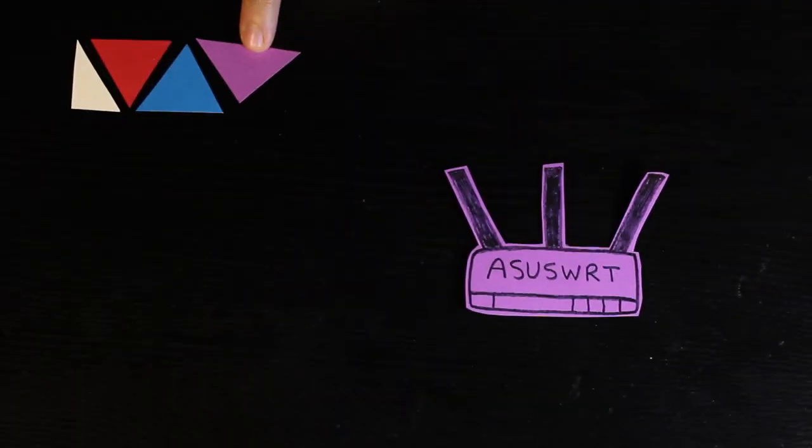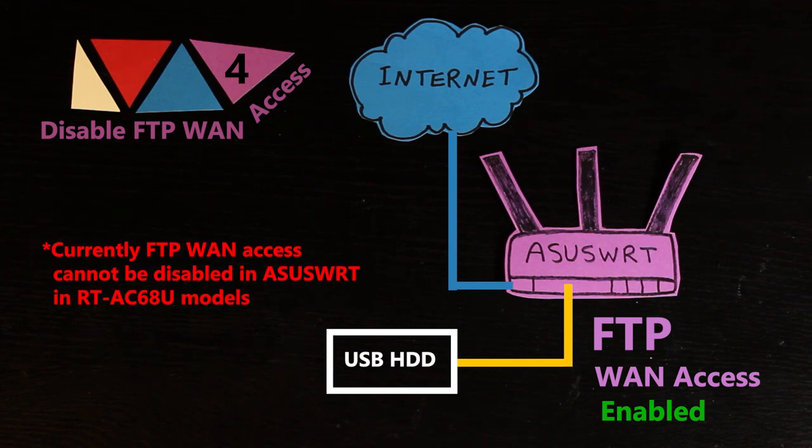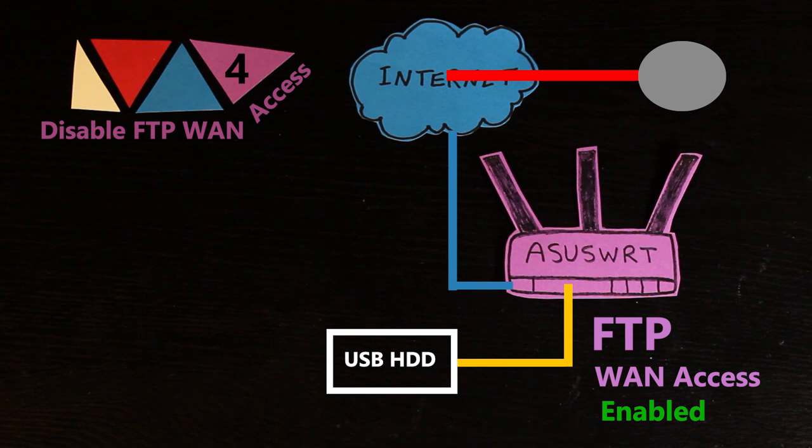Now if I decide to use the FTP protocol to share my USB hard disk drive in the Asus WRT firmware, WAN access is actually enabled and there's no option to disable it. That means people from the outside can try to access my files using FTP - it's just a matter of finding my username and password.